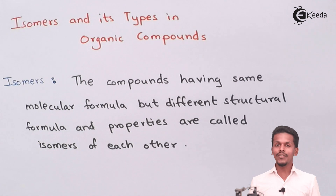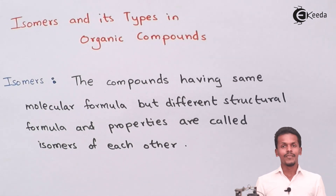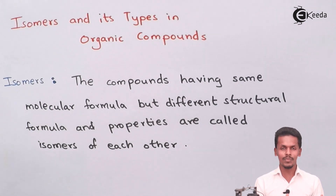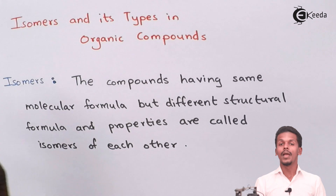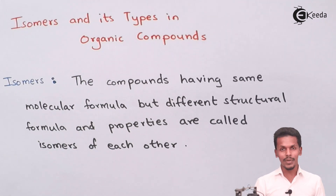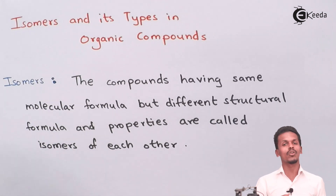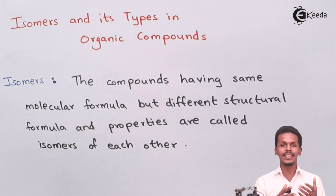Let me give an example. When it comes to isomers, the molecular formula of both compounds would be the same, but they would differ in the structural formula. If they differ in the structural formula, then obviously the chemical or physical properties would also be different when we compare them to each other.